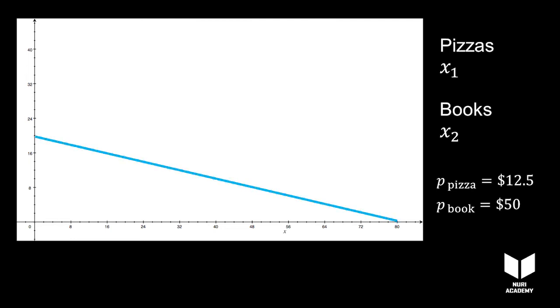This line shows all the combinations of books and pizzas you can buy if you spend all your income on books and pizzas. That is the maximum number of books and pizzas you can afford, your budget limit. It's called the budget line.